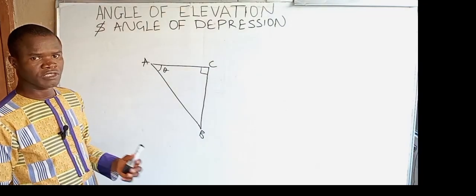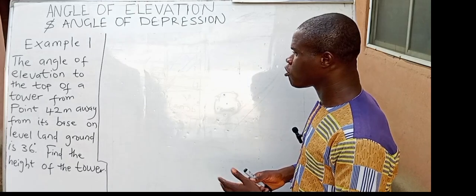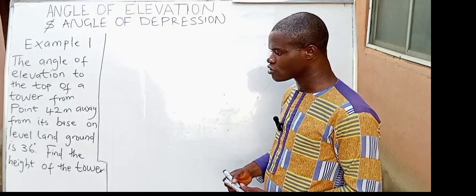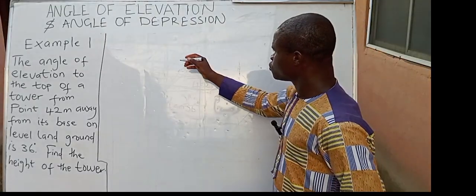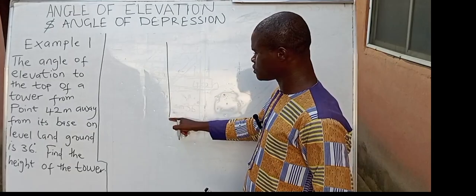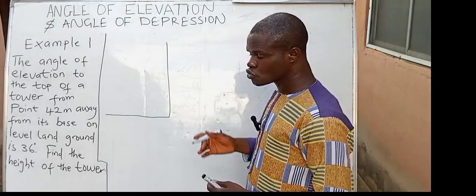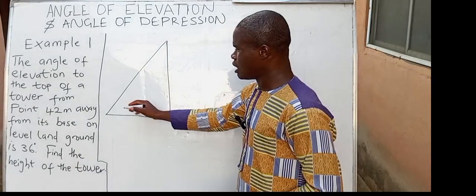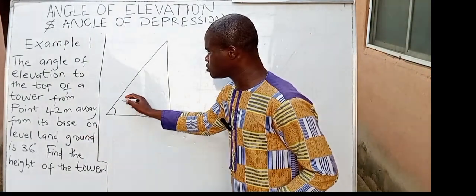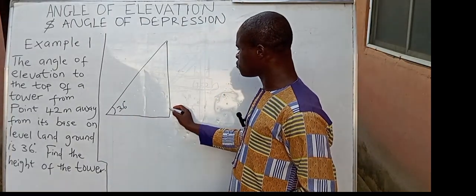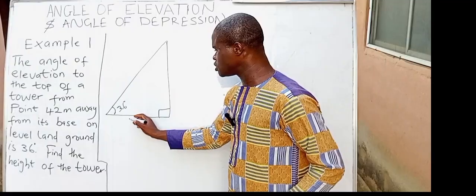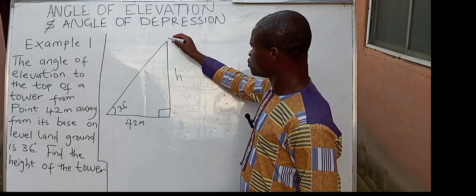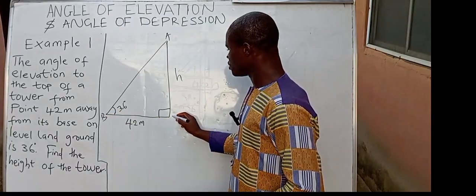Let's take practical examples. Question number one: the angle of elevation to the top of a tower from a point 42 meters away from its base on level ground is 36 degrees. Find the height of the tower. We represent the tower with a vertical straight line. The base of the tower gives us our normal line, and the angle of elevation takes place from the point on the ground to the top of the tower. The distance from the base is 42 meters, and we need to find height H. Let's call here A, B, and C.